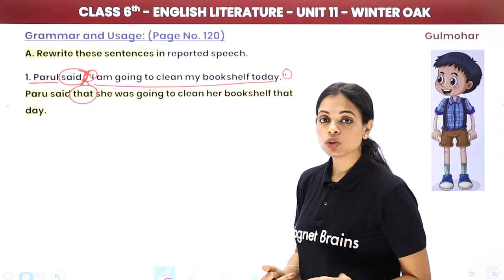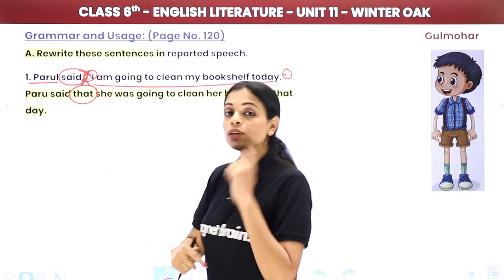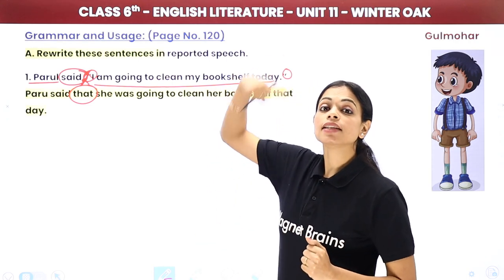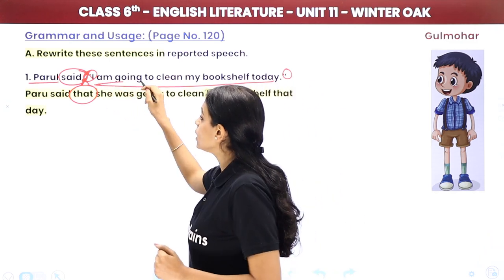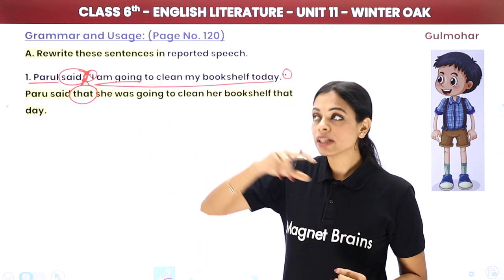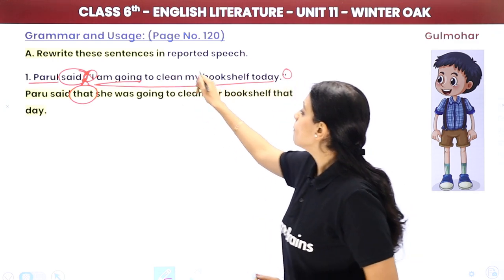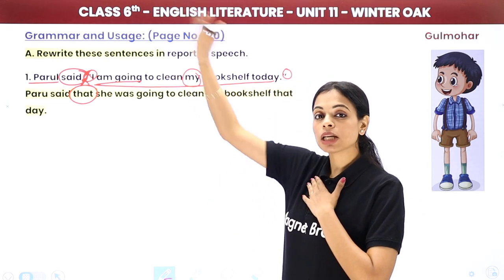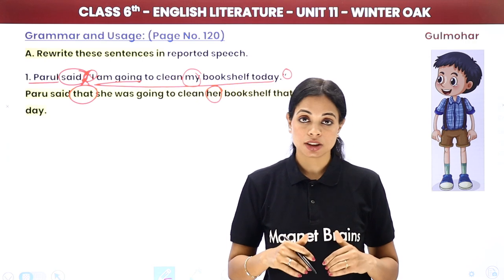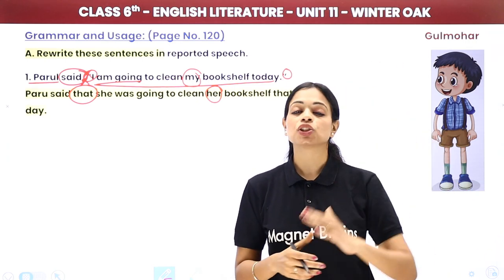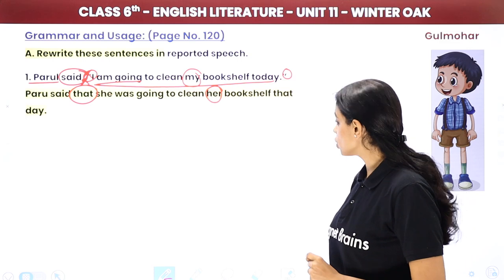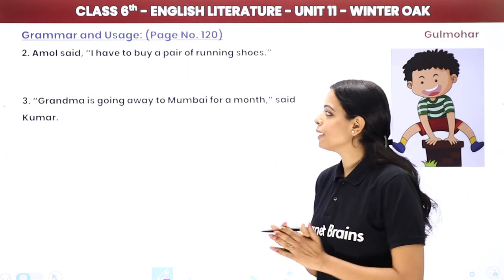Transforming the example: Parole said that she was going to clean her bookshelf that day. 'I' changes to 'she,' 'am going' becomes 'was going,' 'my' becomes 'her,' and 'today' becomes 'that day.' Now the first question: Amol said, 'I have to buy a pair of running shoes.' In reported speech: Amol said that he had to buy a pair of running shoes.